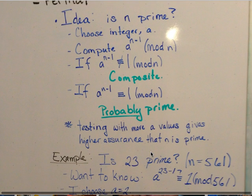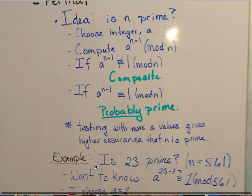For example, if we want to know is 23 prime, forgot to change that this 561 here and here should both be 23. It's a mistake.